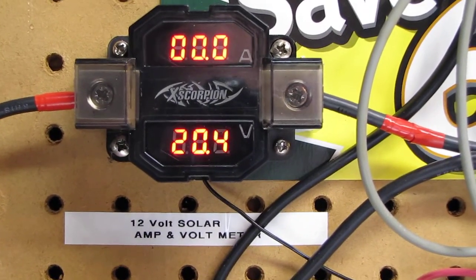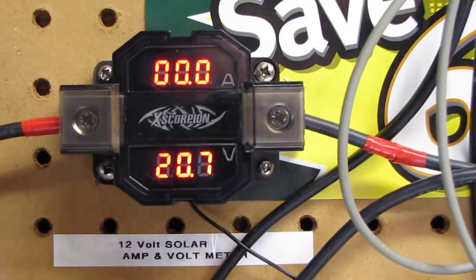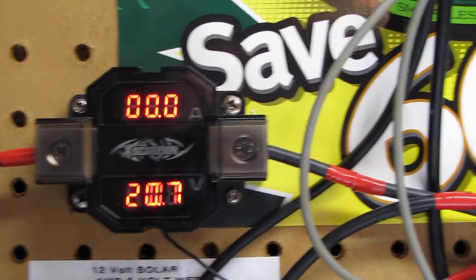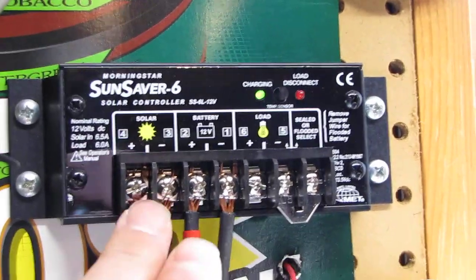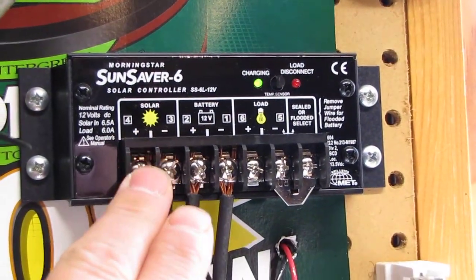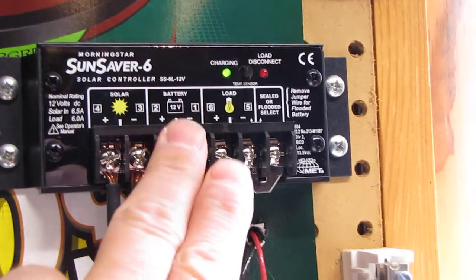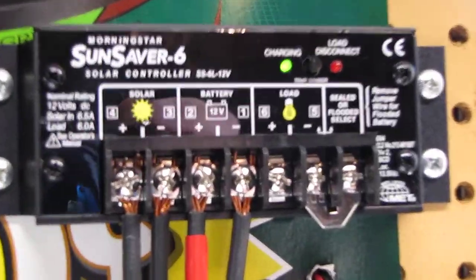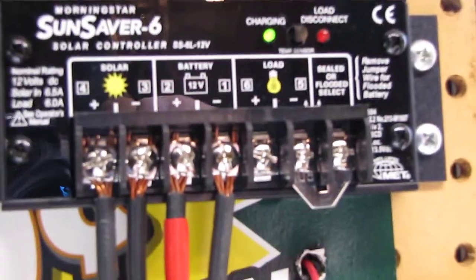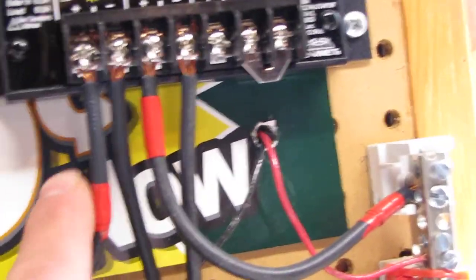This is a 12 volt system and I'm not pulling a load right now on the amps. My batteries are fully charged and it's a PWM type charge controller. It's good for six amps for solar panels. You see the light is charging. Here's how I got it wired up.